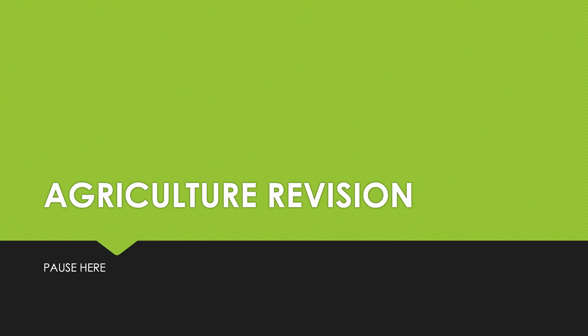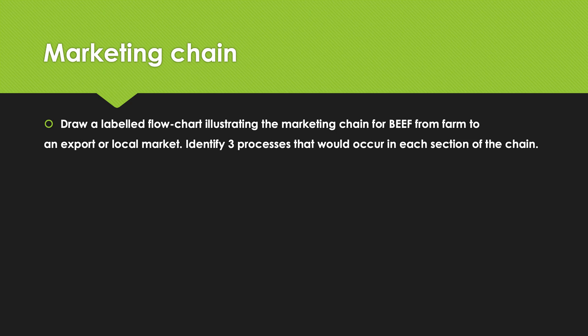One of the questions you were asked was to draw a labeled flowchart illustrating the marketing chain for beef from farm to an export or local market, and identify three processes that would occur in each section of the chain. Some of you drew awesome diagrams and gave more than three processes, which is fantastic — as many as you can would be superb, and it means you have a huge deposit in your head that you can draw upon.